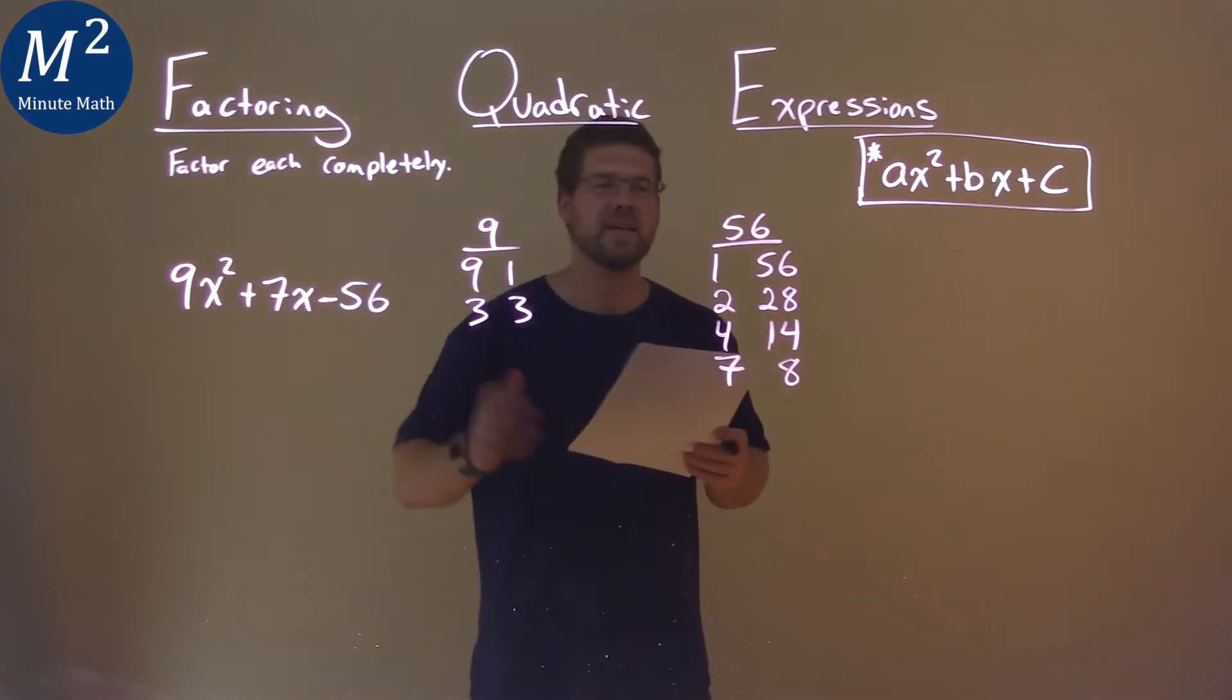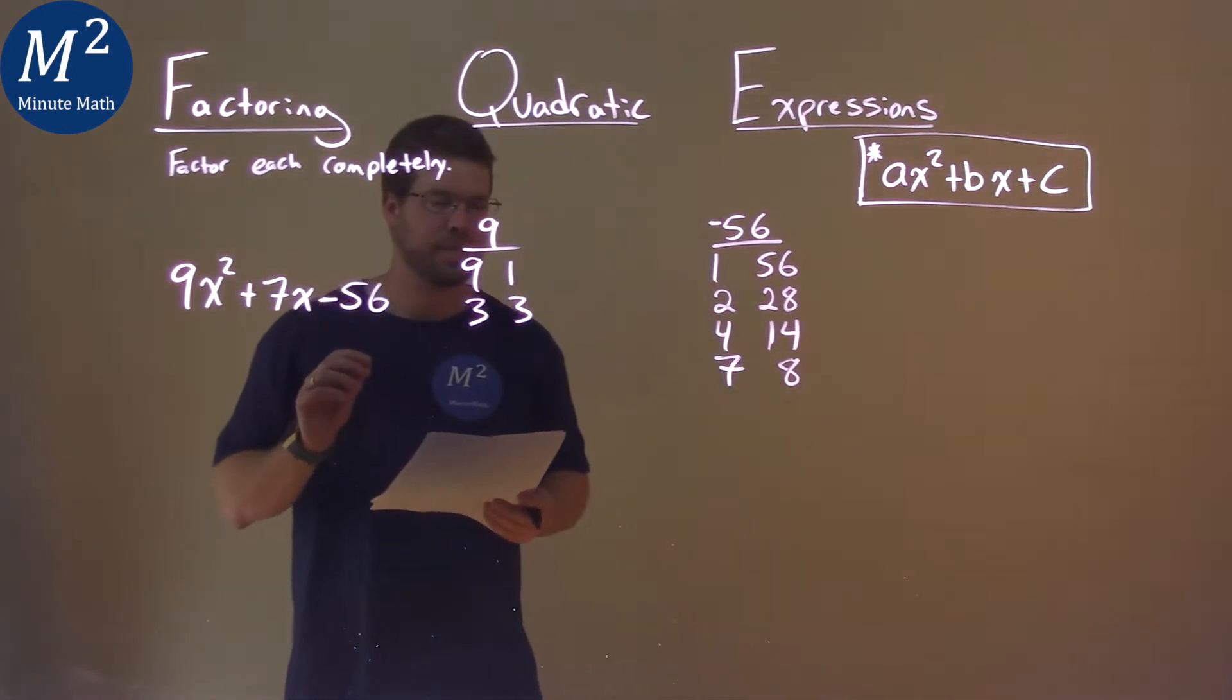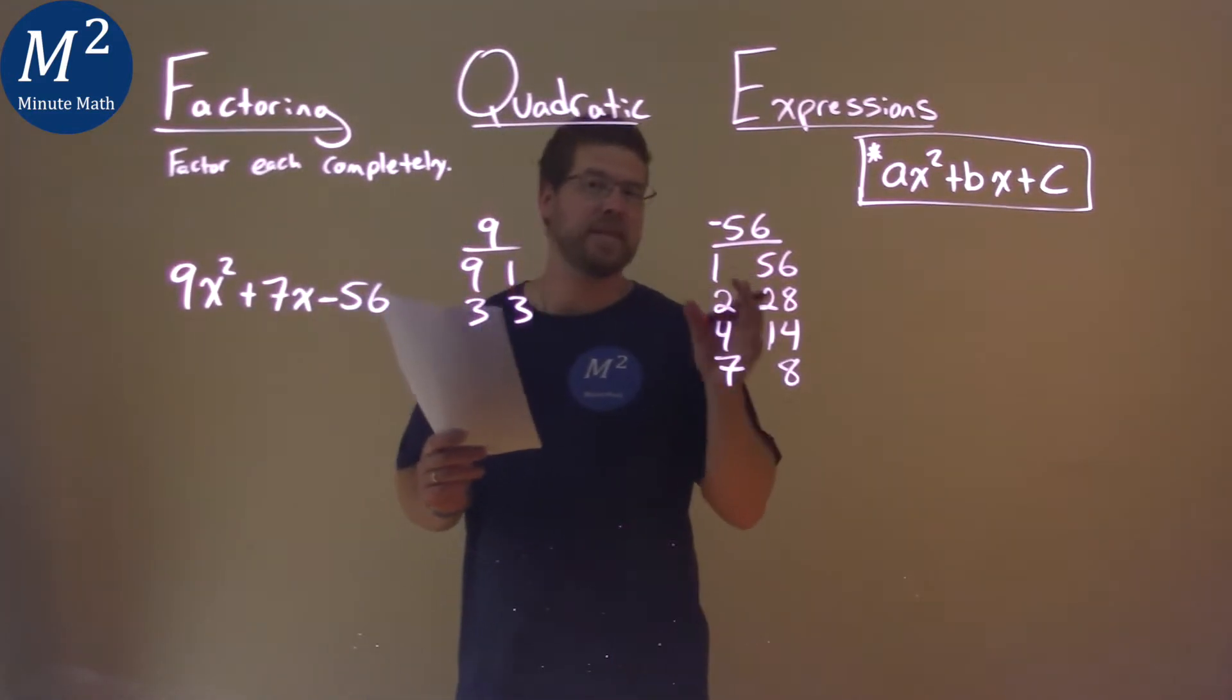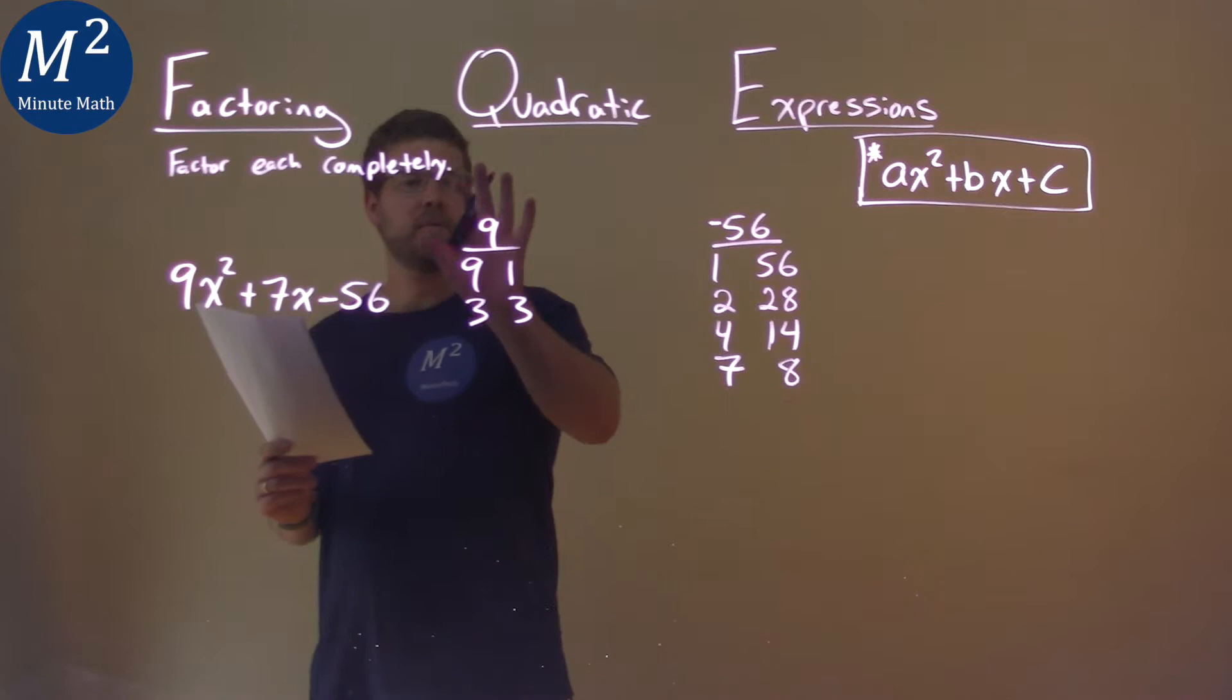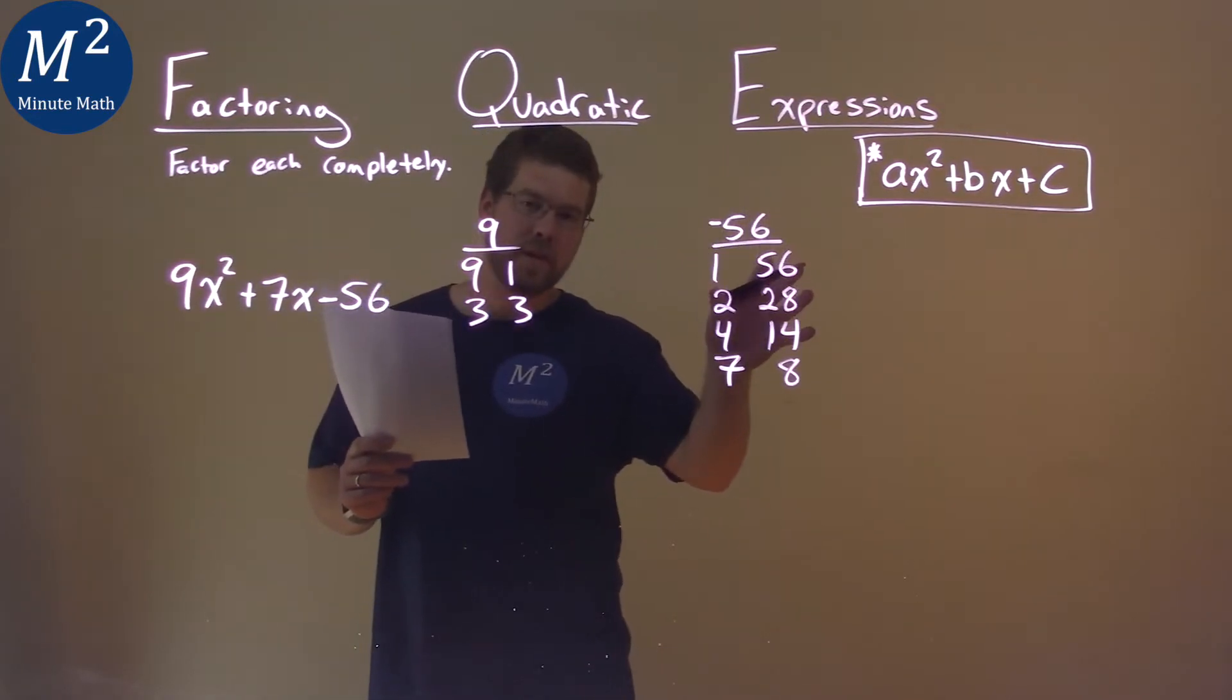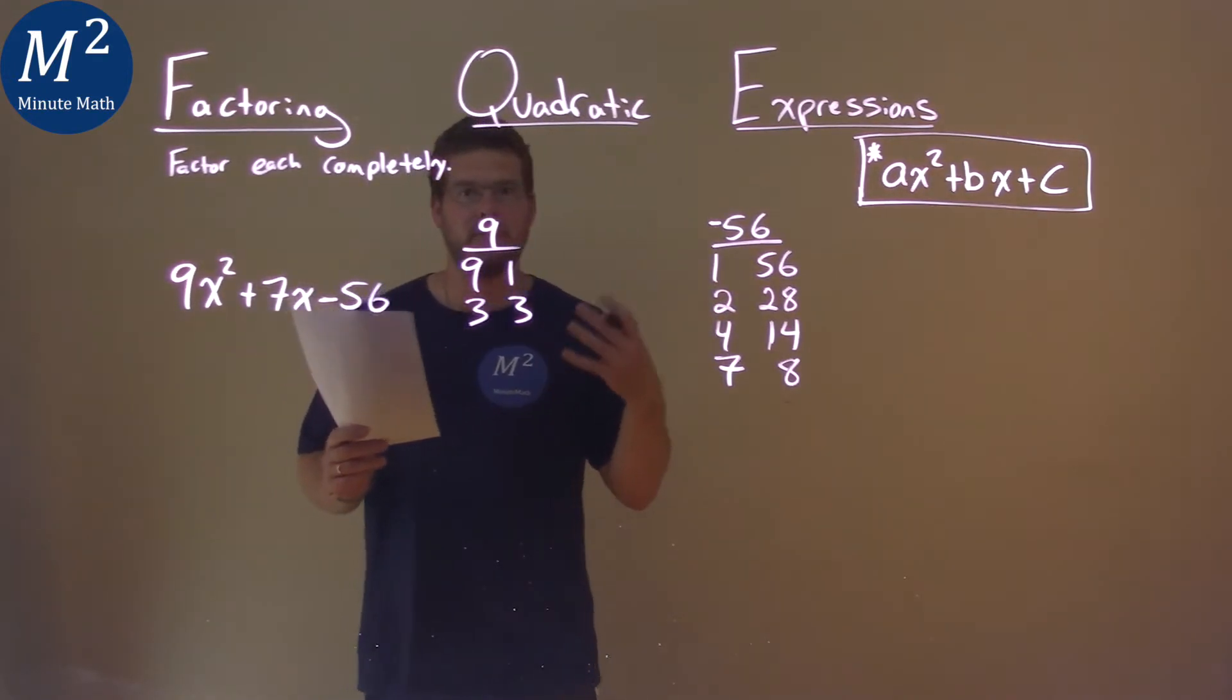Now, we know it's a negative 56 and our b value is positive. So that tells us two things. One, that one of the c values has to be negative. But the b value being positive tells us that when we take a pair from the a and multiply by a pair from the c, then add from the other one from the a and the other one from the c that we multiply together, that has to be a positive value.